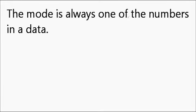Statement 1 is, the mode is always one of the numbers in a data. Now if you remember the definition of mode, definition of mode is the data which occurs maximum number of times. So, we are talking about a data which is part of our data set which occurs more number of times. So, which means it has to be always one of the numbers in the data.